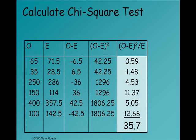So what I've done here is just rearrange the data from the observed and expected values we have from each cell. Remember, the first cell had an observed of 65 and an expected of 71.5. The next cell had 35 and an expected of 28.5, and so on.